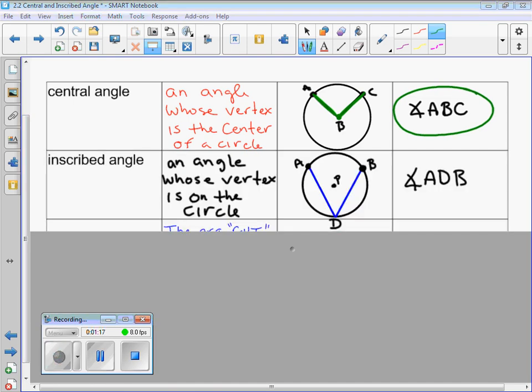All right, next up is an inscribed angle. An inscribed angle is an angle whose vertex is on the circle. Okay, so the blue one is on the circle, you see the vertex is down there on the circle. That's an inscribed angle. No big deal. Again, three letters, and we can designate that as an inscribed angle because the vertex is on the circle. Moving on to the next one.